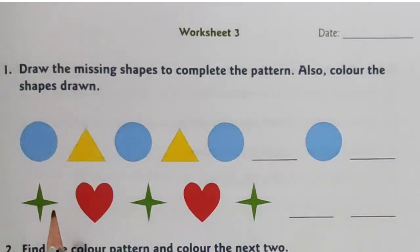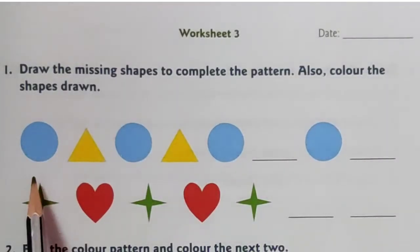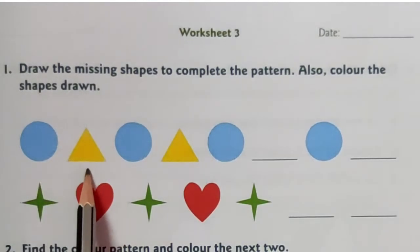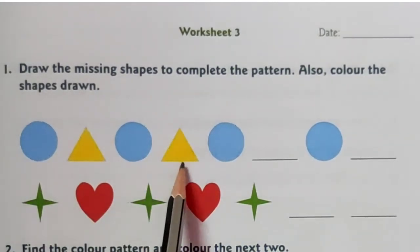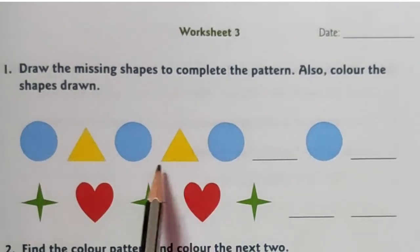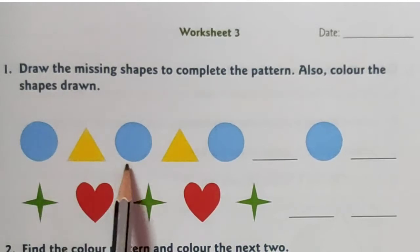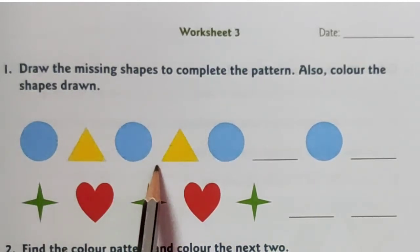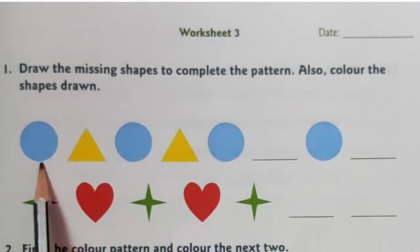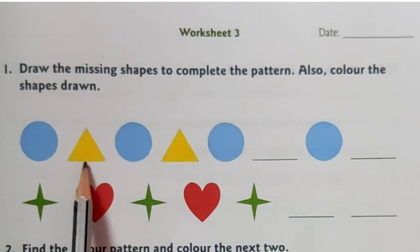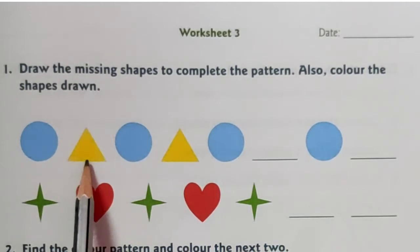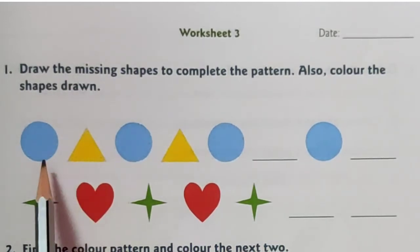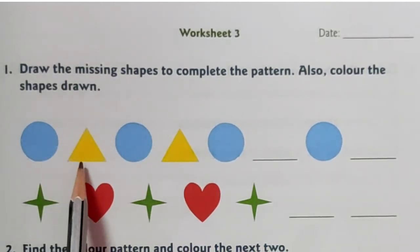Here, the first shape is circle. Next is triangle. Again circle, again triangle. So, the complete shapes are triangle and circle. So, here, after circle we have triangle.